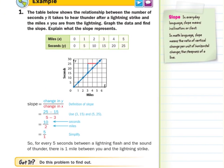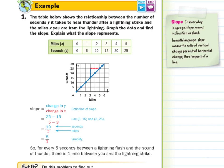In guided example 1, the table below shows the relationship between the number of seconds, y, it takes to hear thunder after a lightning strike, and the miles, x, you are away from the lightning. Graph the data and find the slope. Explain what the slope represents. All right. Well, we have our table 0, 0, 1, 5, 2, 10, 3, 15, 4, 20, 5, 25. And you can see where they graph 0, 0, 1, 5, 2, 10, and so on. Then to use this graph to find the change in y's, we used this point and that point. And so our change in y, we had 25 minus 15 for the change in y's. We had 5 minus 3 for our change in x's. We simplified to 10 over 2, which is 5 over 1. So for every 5 seconds between the lightning flash and the sound of thunder, there is one mile between you and the lightning strike.